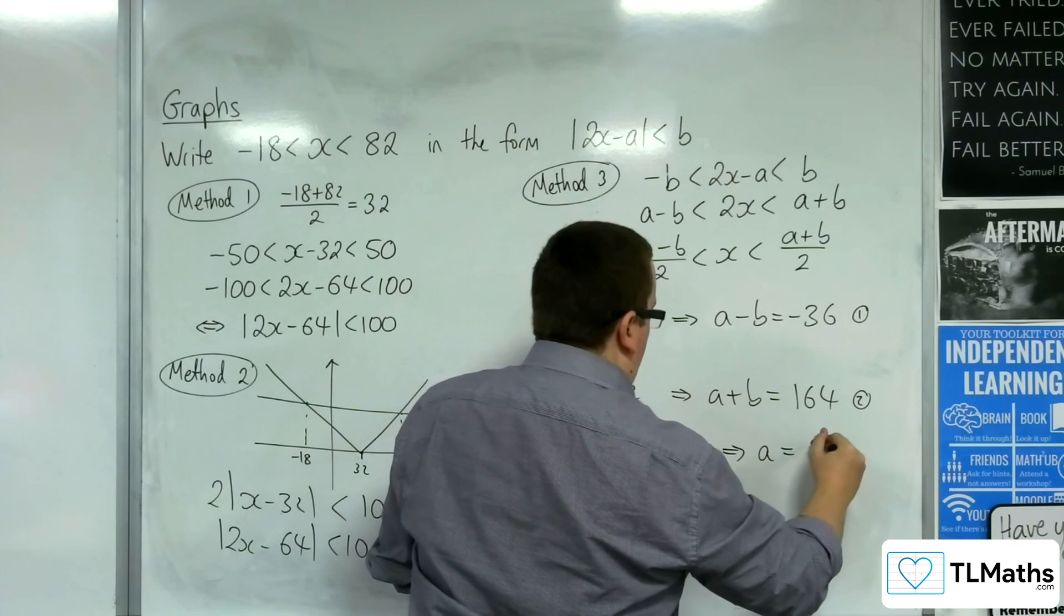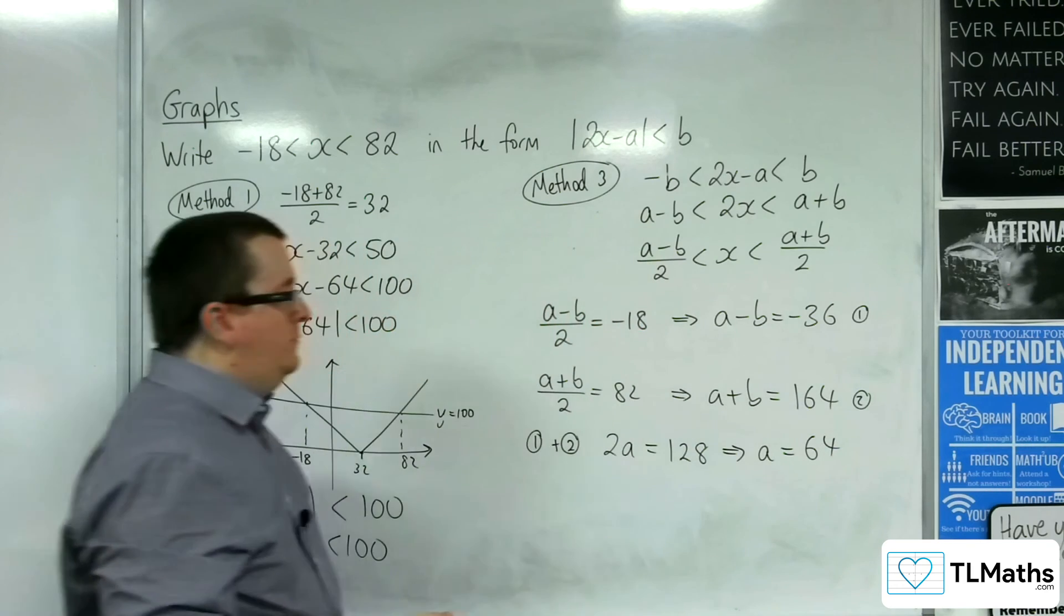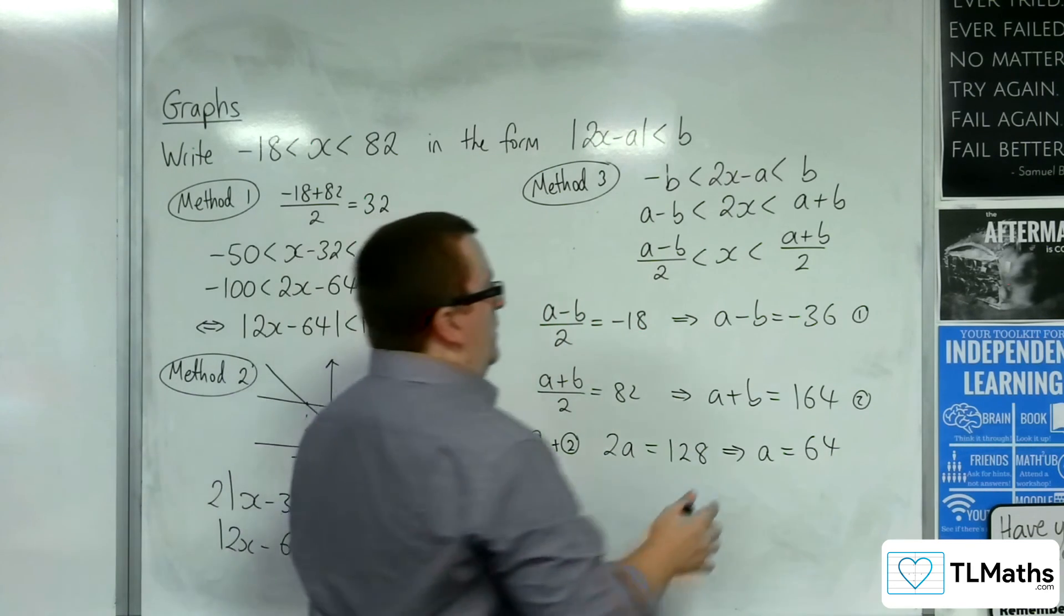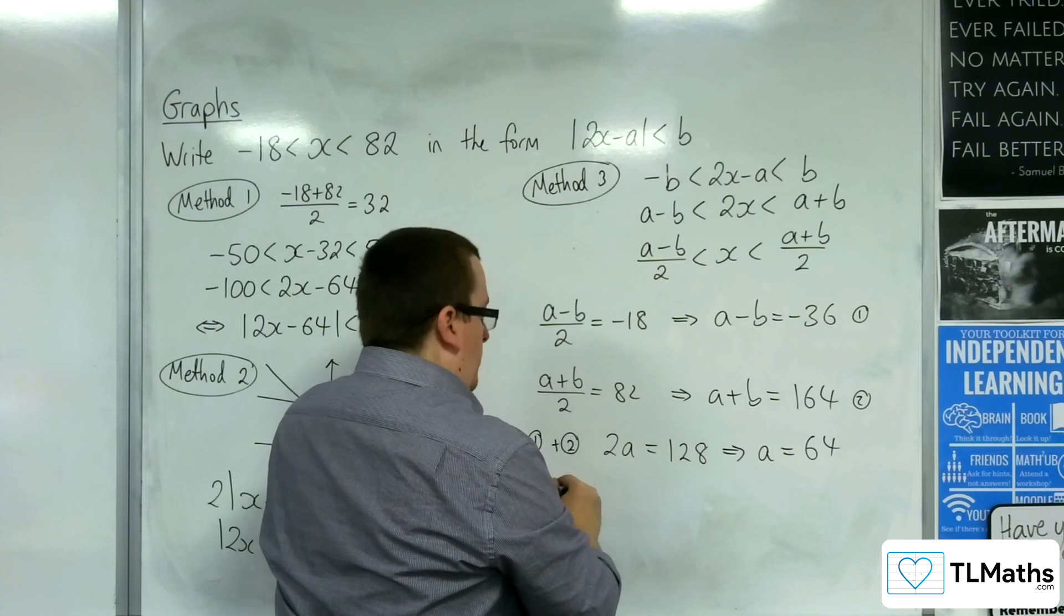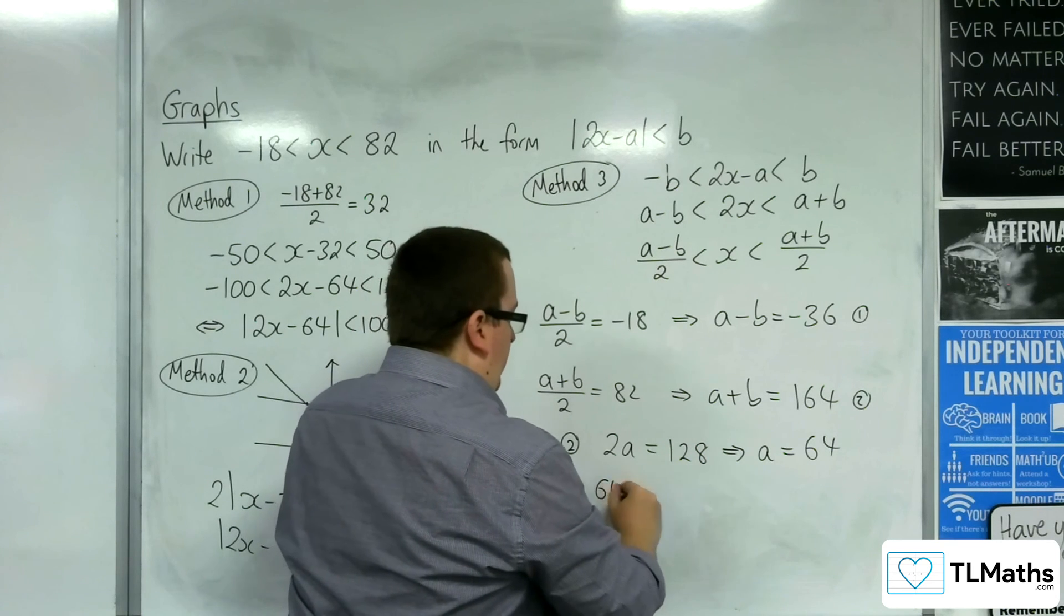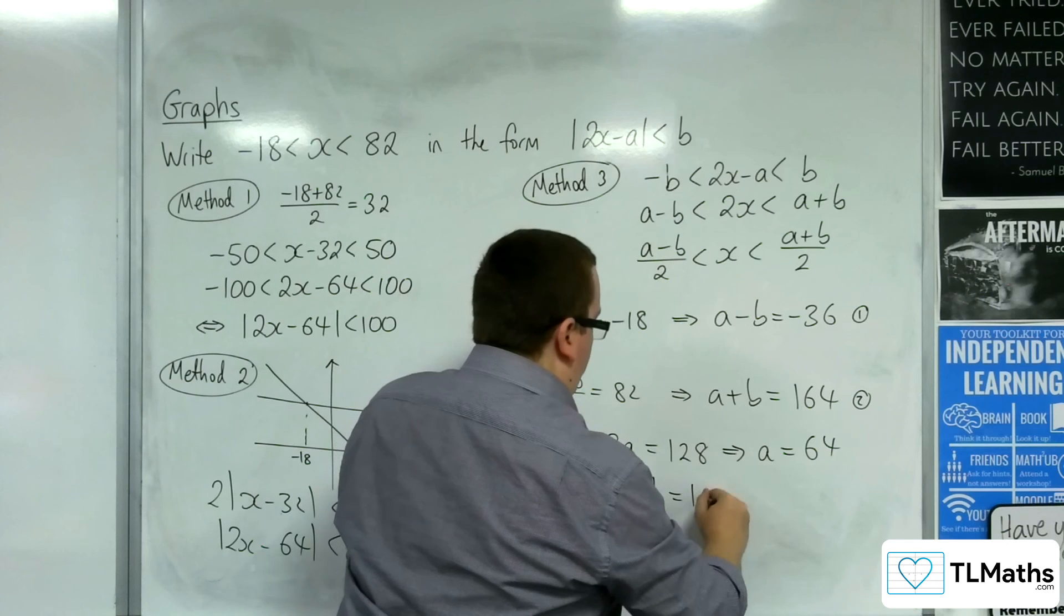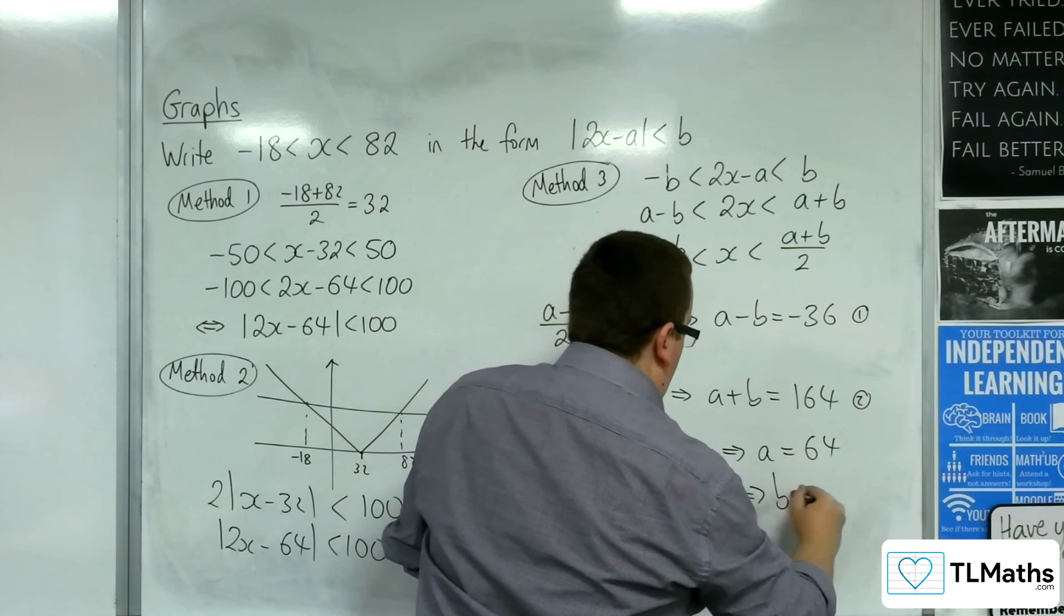So a would have to be 64. And then if a is 64, we sub into equation number 2. 64 plus b has got to be 164, so that means that b has got to be 100.